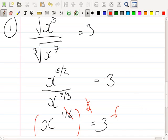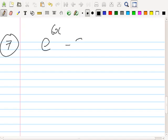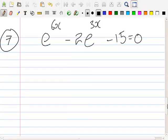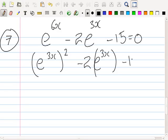So, number 7. E power 6X minus 2E power 3X minus 15 equals 0. So, this will be E power 3X squared minus 2E power 3X minus 15 equals 0. Because 3X times 2, of course, is 6X. But what you know is that this is quadratic.